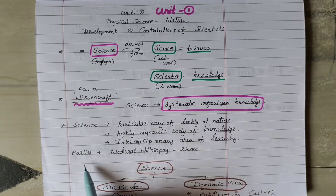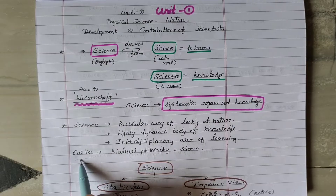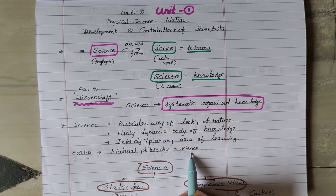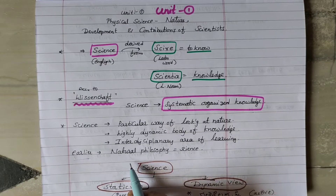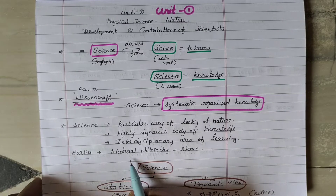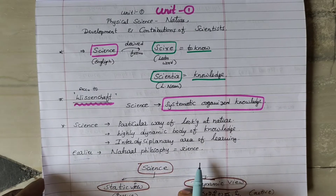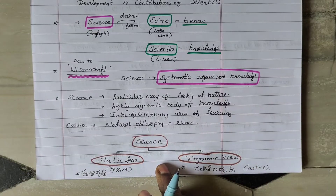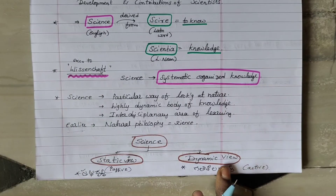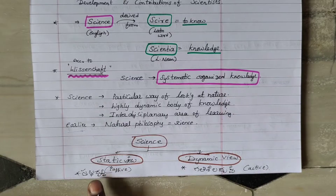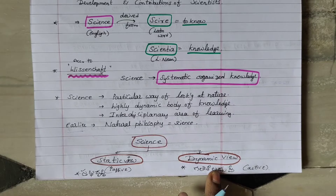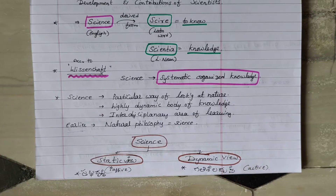In the early years, this science was called natural philosophy. This science has two types: one is static and dynamic. Static is a type of knowledge. Dynamic is a type of knowledge — it is active.